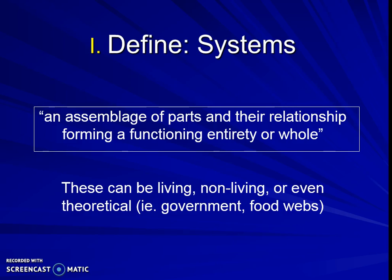These components and systems can be things that are living, nonliving, or theoretical. We even just learned about a theoretical system called the environmental value systems. It could also be like governmental systems, or living things like food webs or food chains.